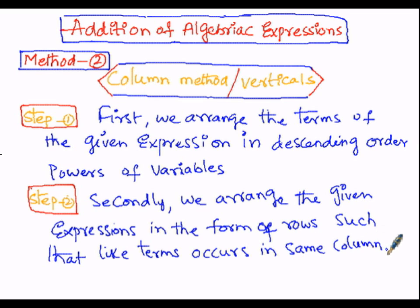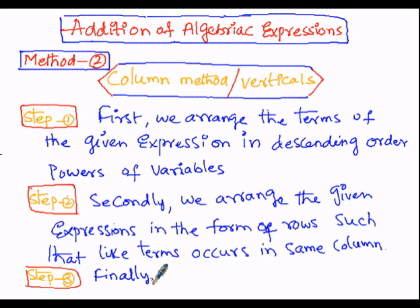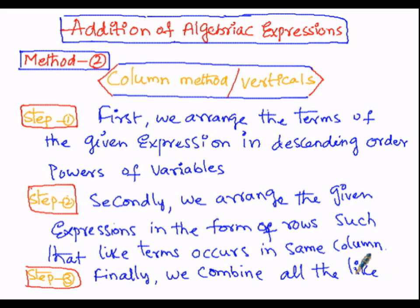To summarize: first, arrange all the terms of the given expressions in descending order of powers of the variables. Second, arrange all the given expressions row-wise such that all the like terms fall in the same column. Then in step number three, finally we combine and add up all the like terms which are under the same column.